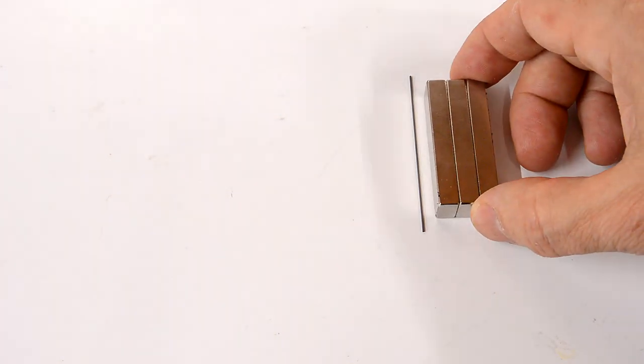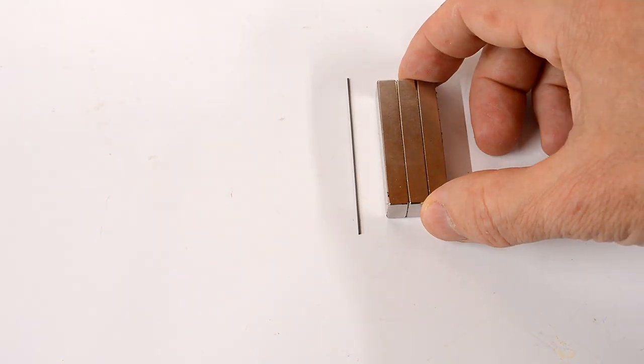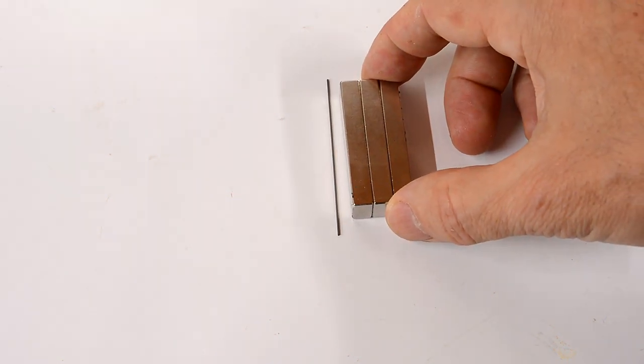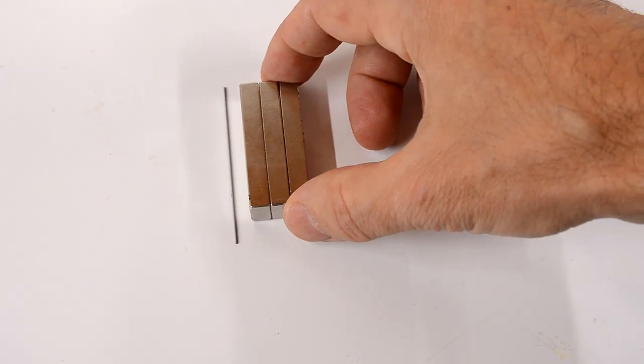If I bring that up, even before it touches the pencil lead, the pencil lead tends to roll away from the magnet. The graphite of the pencil lead is repelled by the magnetic field from these rare earth magnets.